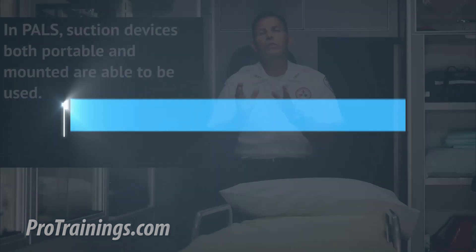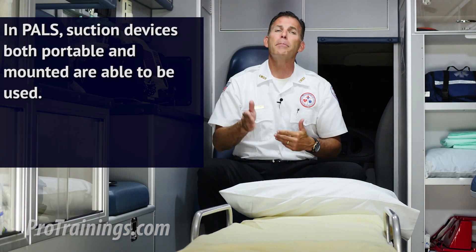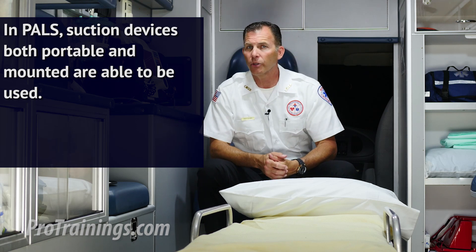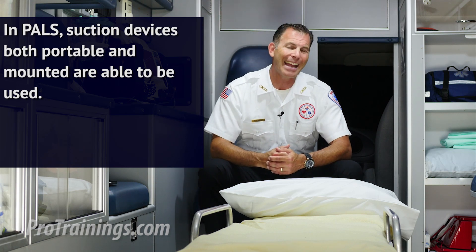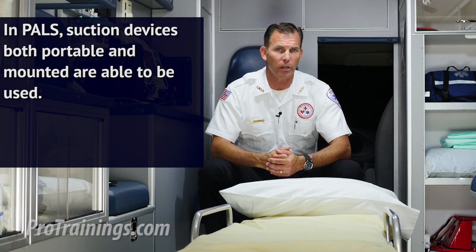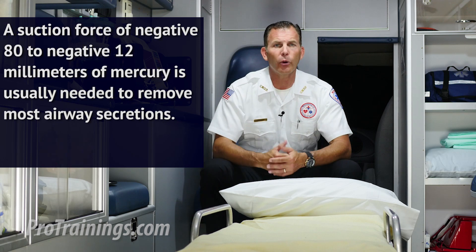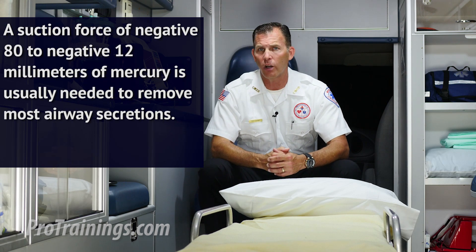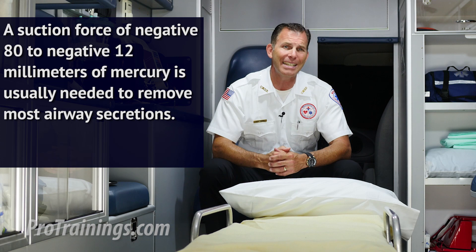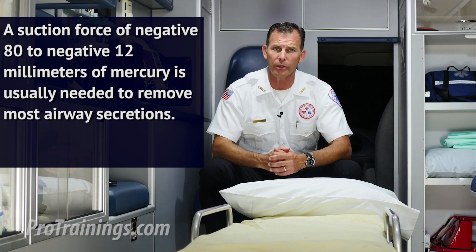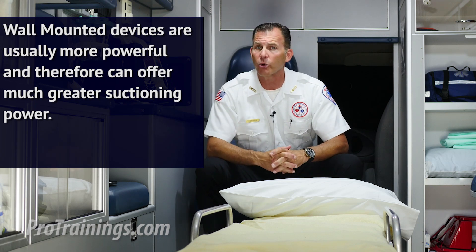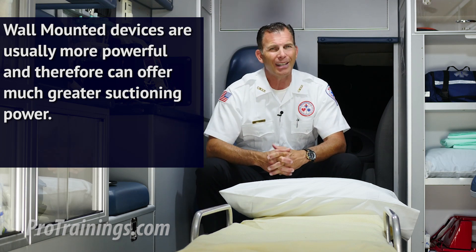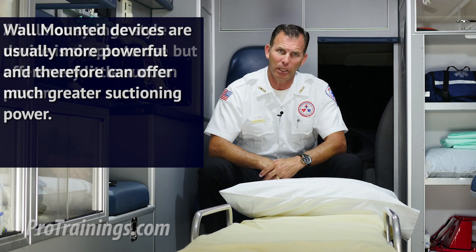In PALS, suction devices — both portable and wall-mounted — are able to be used. The benefit of a portable device is that it can be transported to wherever it's needed, but sometimes portable suction can be inadequate based on maximum suction power. A suction force of negative 80 to negative 120 millimeters of mercury is usually needed to remove most airway secretions. Wall-mounted devices are usually more powerful and can offer much greater suctioning power, but they cannot be moved and therefore may be limited.